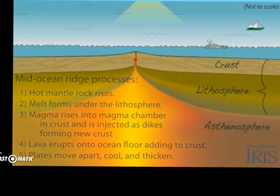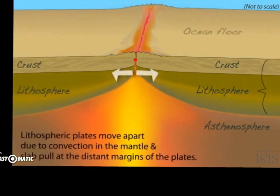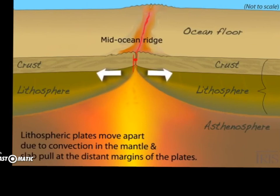The lithospheric plates move apart due to convection in the mantle. The convection in the mantle is actually where the asthenosphere is moving. In this case, the asthenosphere on the left is moving westward in a circular motion, and the asthenosphere on the right is moving eastward in a circular motion, so that the lithospheric and crustal plates can move to the right and to the left respectively.